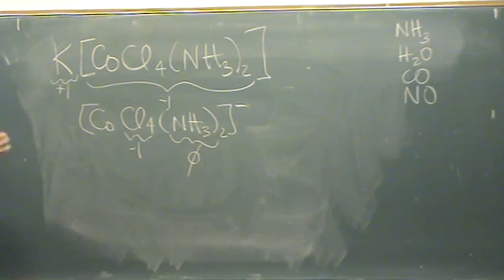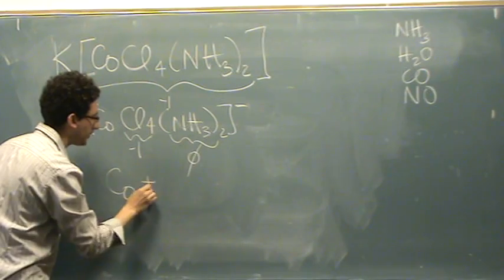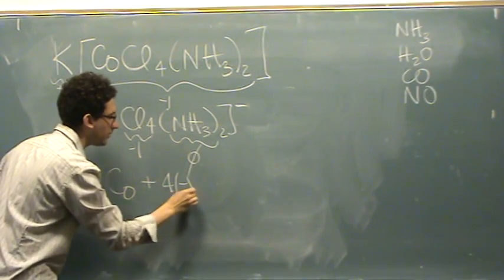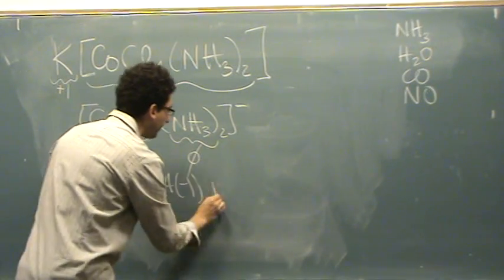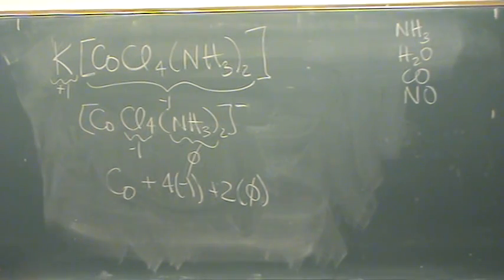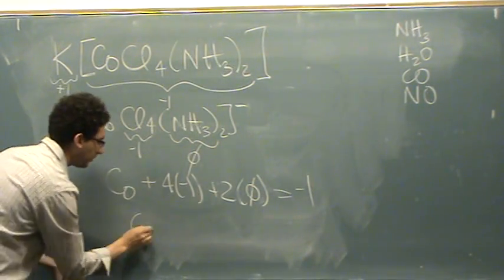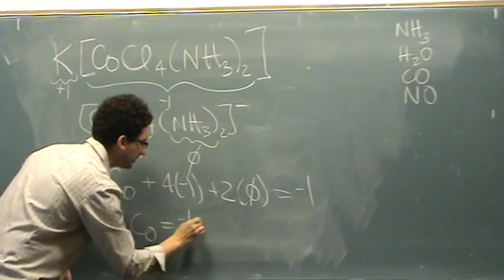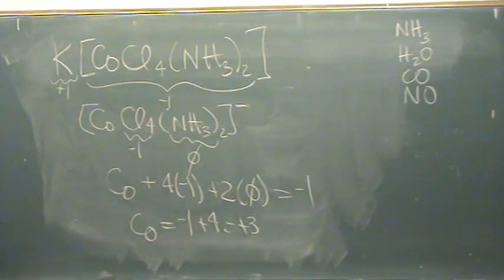So that means, set up a little formula: cobalt plus four times negative one—so four minus one charges. And if you want, for completeness, two ammonias at zero equals the overall charge of negative one. So cobalt is minus one plus four, or plus three. So the overall charge of cobalt is plus three. Okay, so let's go.